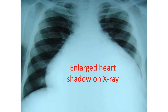X-ray of the chest will show appearance of heart enlargement when there is a lot of fluid collection in the pericardial cavity, known as pericardial effusion. ECG will show a finding called electrical alternance, with alternation in the amplitude of waves as the heart swings within the fluid.